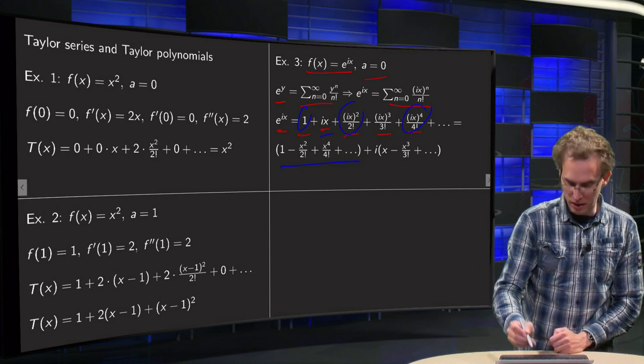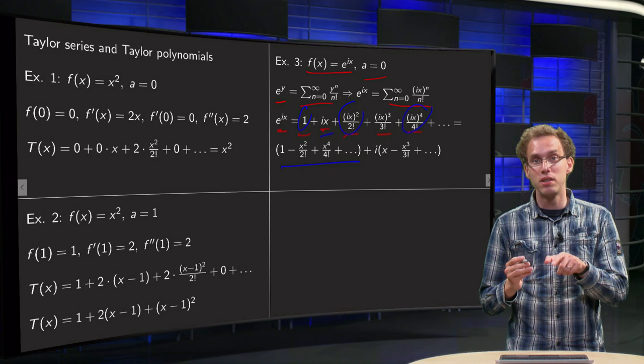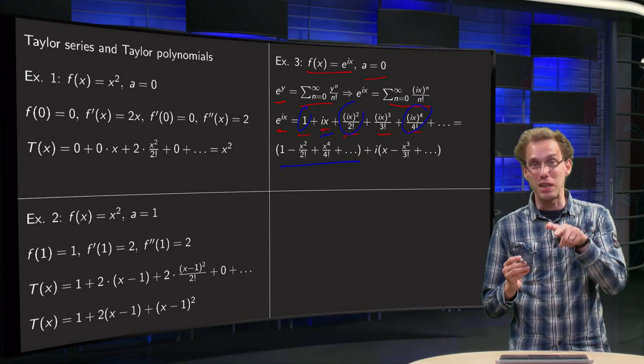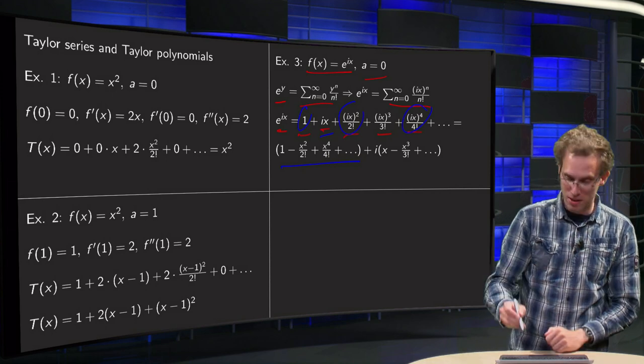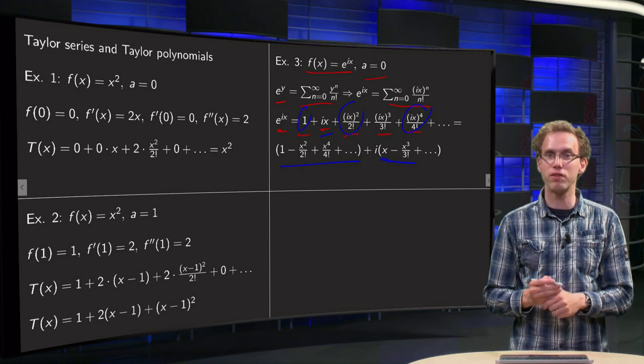And then we take the imaginary terms, so i times x over here, plus i³, i³ = i² · i, so minus i, so -x³/3!, etc., etc.